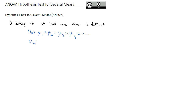The alternate hypothesis is a little different because what we're trying to prove is not that all of the means are different, but just that at least one mean is different. And if we end up rejecting the null hypothesis, we're saying at least one mean is different, but we don't actually know which one — that would require further statistical analysis beyond the scope of this course.